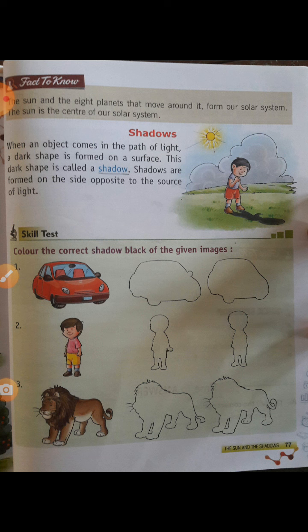Fact 2: The Sun and the 8 planets that move around it form our solar system. The Sun is the center of our solar system. Shadows: When an object comes in the path of light, a dark shape is formed on a surface. This dark shape is called a shadow. Shadows are formed on the side opposite to the source of light. Skill test: color the correct shadow black of the given image.